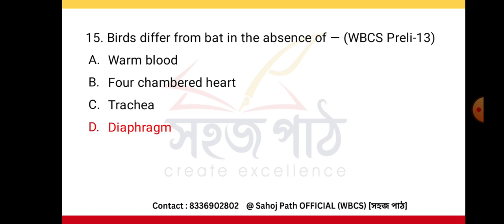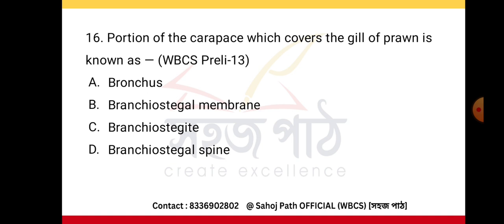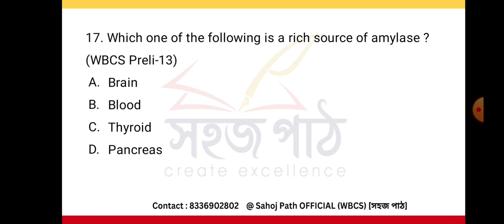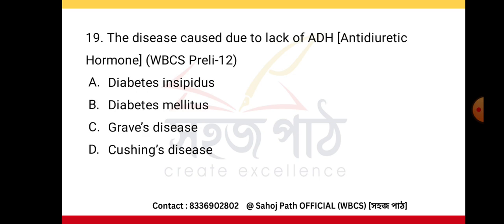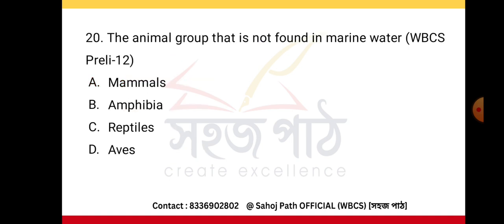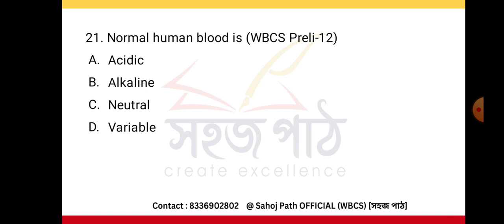The portion of the carapace which covers the gills of prawns is known as branchiostegite. A rich source of amylase is the pancreas. Adult filaria worms live in human lymphatics. The disease caused due to lack of ADH is diabetes insipidus. The animal group not found in marine water is Aves.